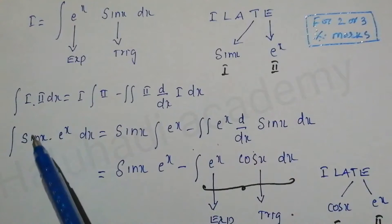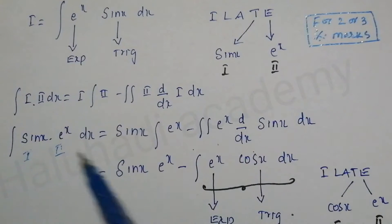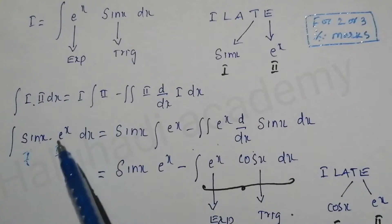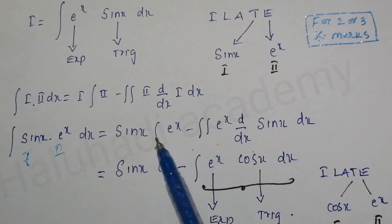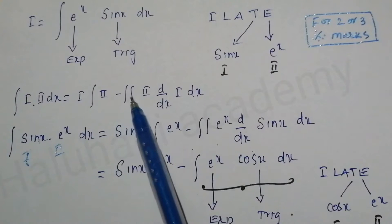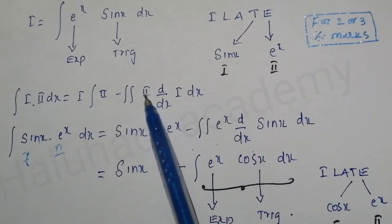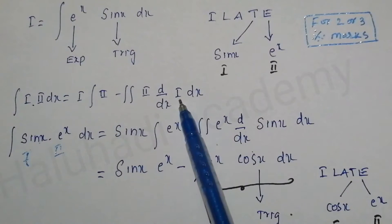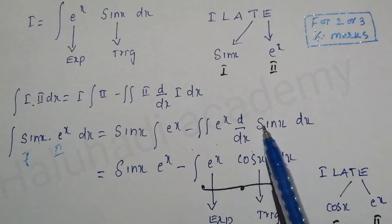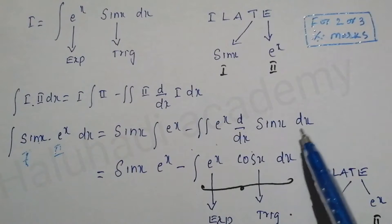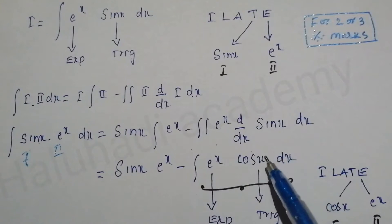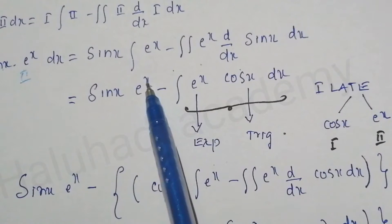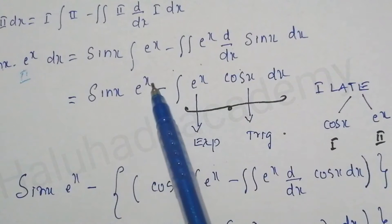Applying the formula: first function is sin x, integral of second function e^x is e^x — because integration of e^x is always e^x. So we get sin x · e^x minus integration of e^x times the derivative of sin x, which is cos x dx.